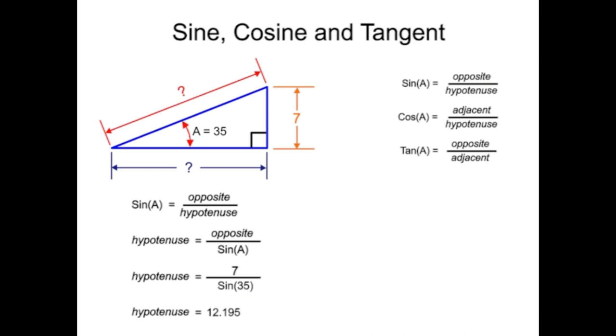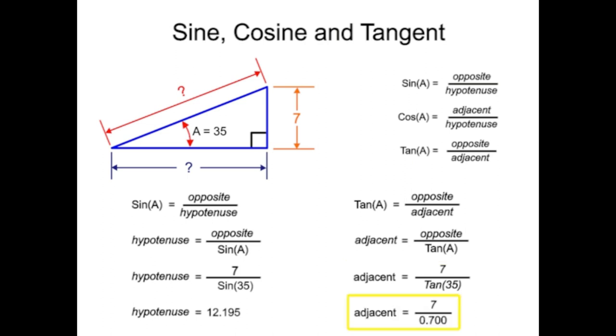Similarly, we could solve for the adjacent side using the tangent equation. Since not all triangles are right triangles, it's useful to know how the trigonometric functions sine, cosine, and tangent relate to regular triangles.